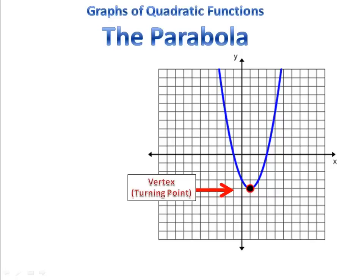Notice it's going downward and then it gets to that point and it turns around and starts going back up. For that reason, we sometimes refer to it as the turning point, although its formal name is the vertex.